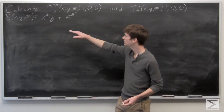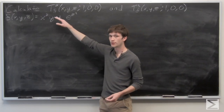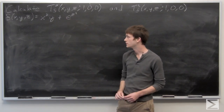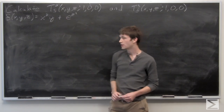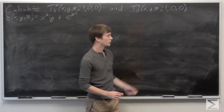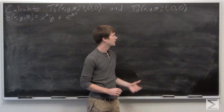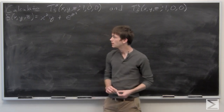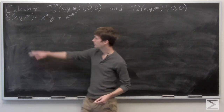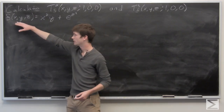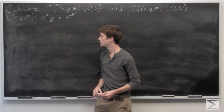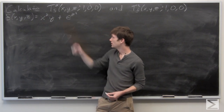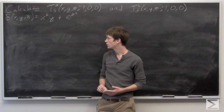In this problem, we're asked to calculate the second order Taylor polynomial of f(x, y, z) around the point (1, 0, 0). And also to calculate the third order Taylor polynomial of f(x, y, z) at the point (1, 0, 0). We're given that our function f(x, y, z) is equal to x cubed y plus e to the power of z squared.